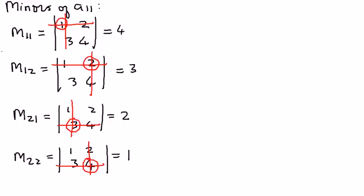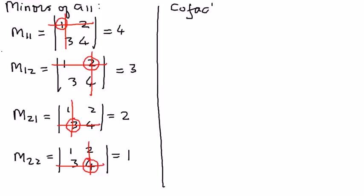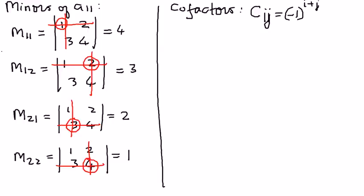Now we want to find the cofactors as well. We know the formula for cofactors: Cij is equal to negative 1 raised to the power of i plus j, times Mij.